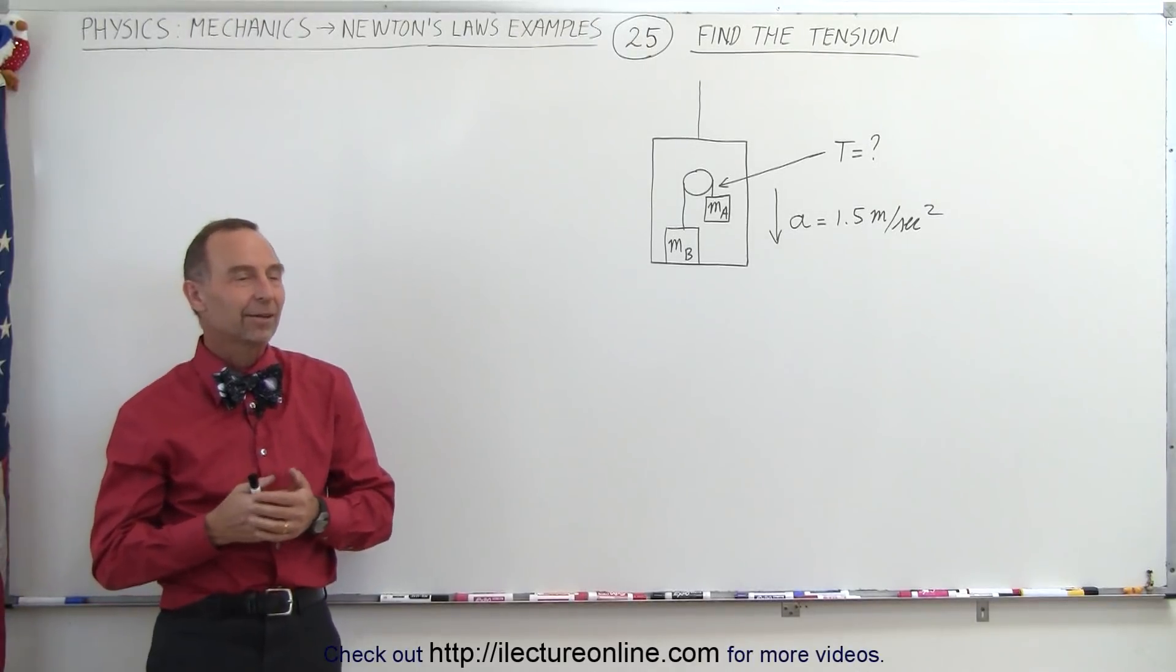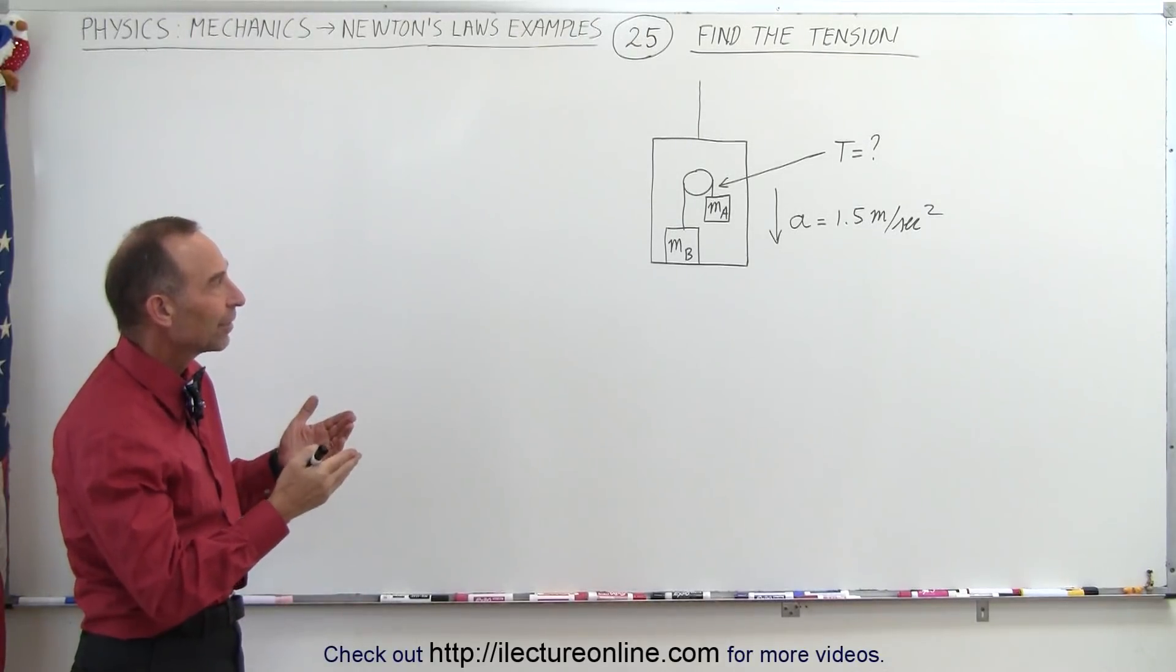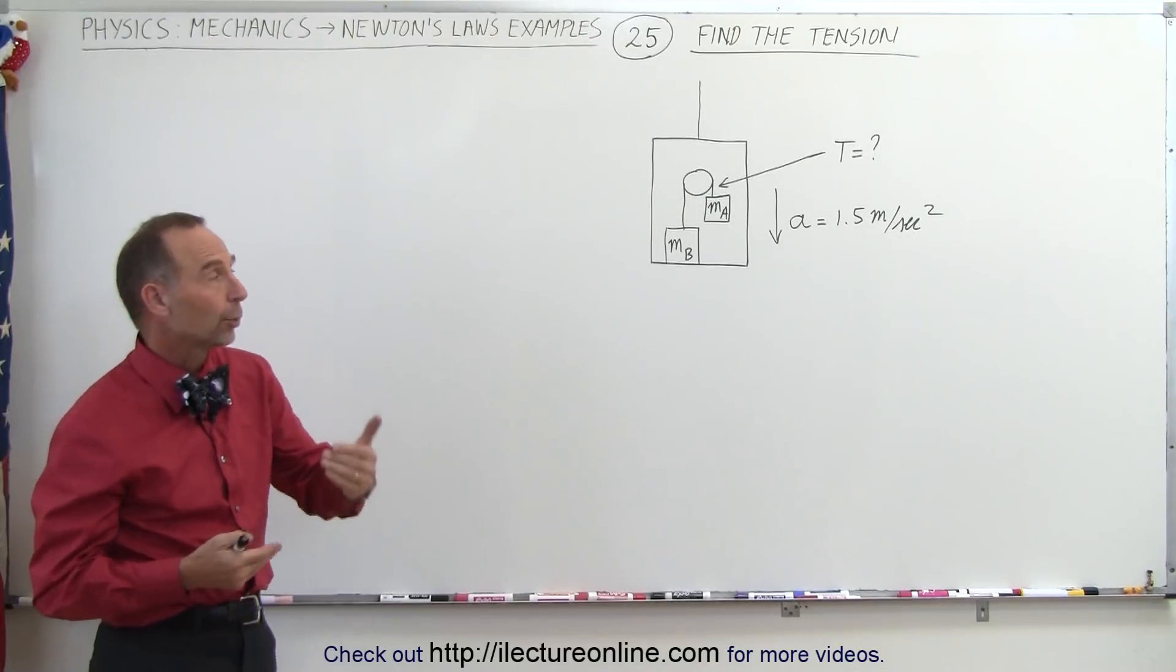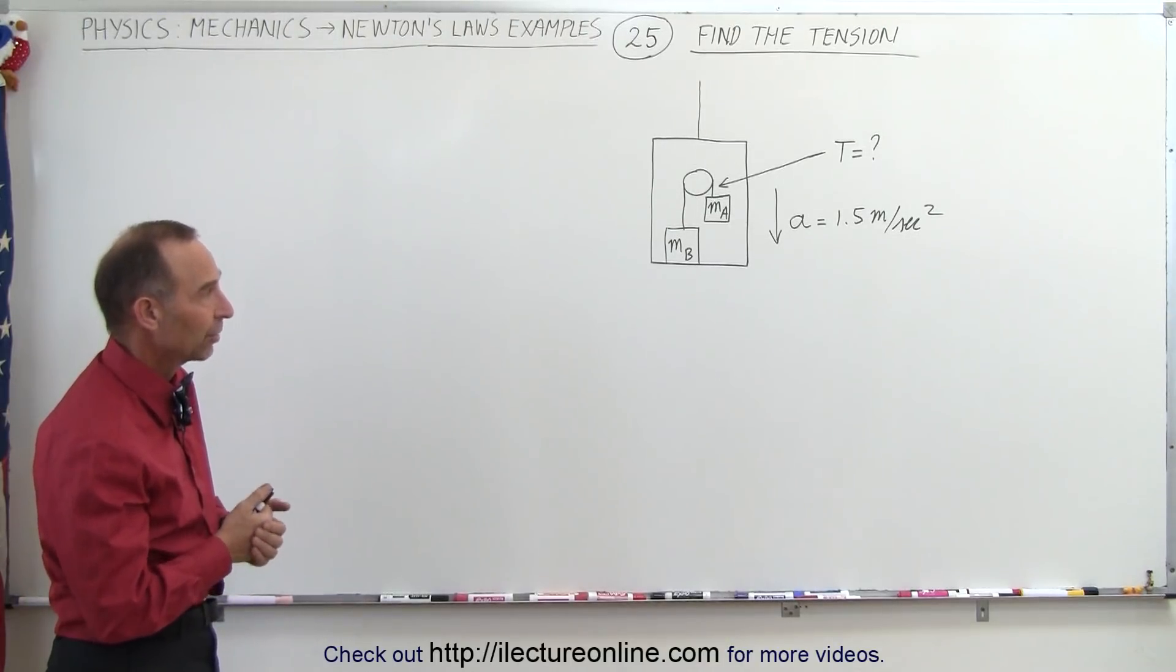Welcome to ElectronLine. Our next example shows an elevator that is accelerating downward at 1.5 meters per second squared.